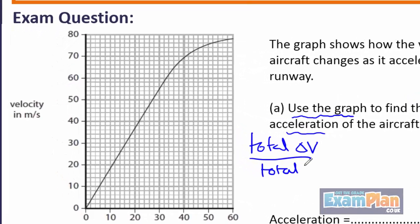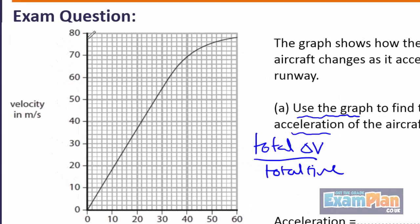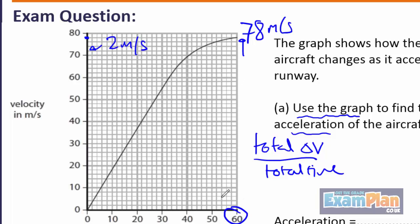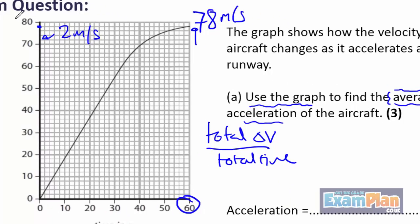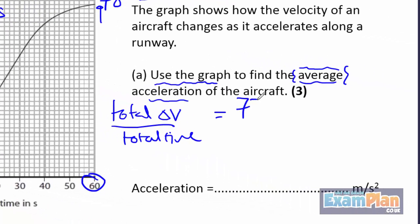The total change in velocity is 78 meters per second, as each of the small squares represents 2 meters per second and we have 4 small squares above the 70. The total time taken is 60 seconds. 78 divided by 60 gives us an answer of 1.3 meters per second squared.